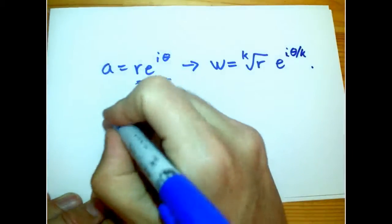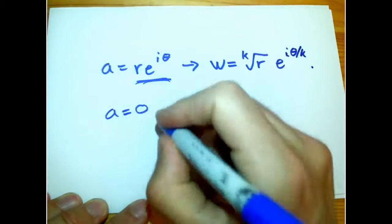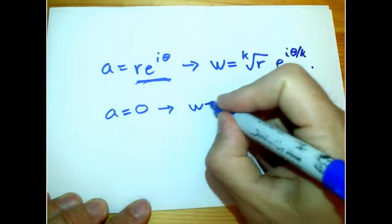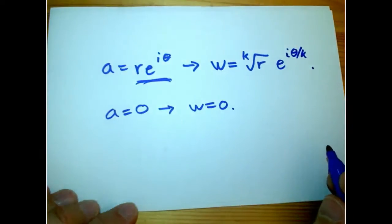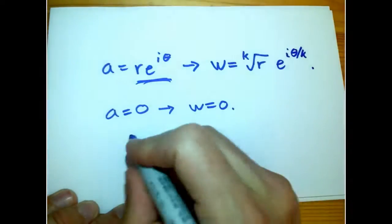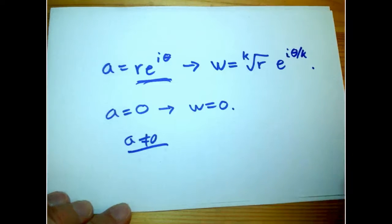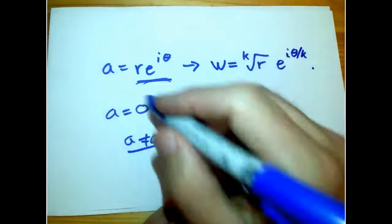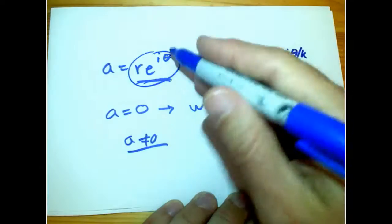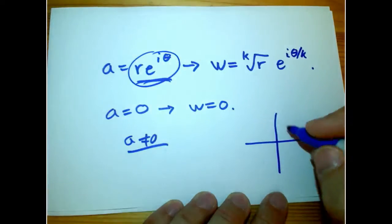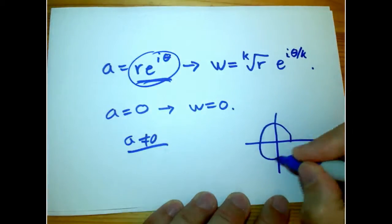First of all, if a equals zero, this is trivial. Any k-th root of zero is zero. So from now on, I'm going to assume that a is not equal to zero. And now what I'm going to do is use, I'm basically going to use this without knowing about e^(iθ).